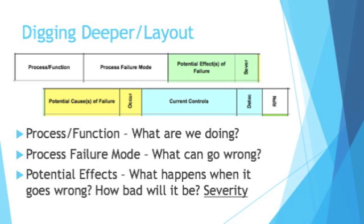Next you have the potential effects of the failure. This isn't the failure itself — this is what happens when it goes wrong. So if your failure is that the press doesn't complete a full cycle, what's the effect of that? Is the part not completely pressed together? Will that make one of its dimensions out of spec? Does it pose a safety hazard? From here you can get your severity score, which is the first numeric score you'll apply to this failure mode.